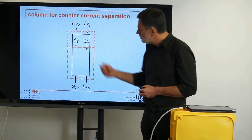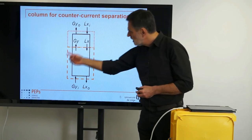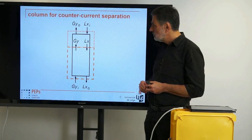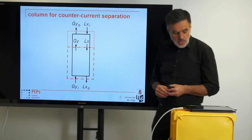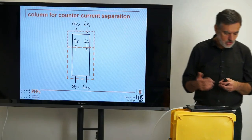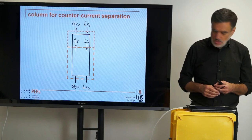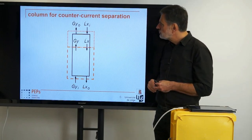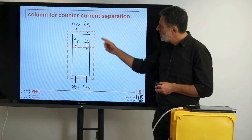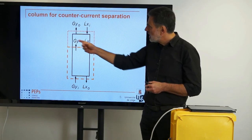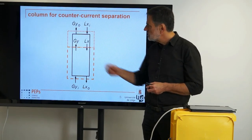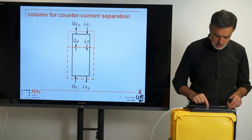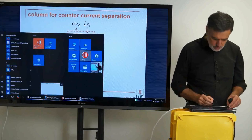We have a top control volume and a bottom control volume that we can regard, and we can set up the balances for these control volumes. Let's first look at the dotted control volume at the top, where we have Xi, YO, and the general X and Y in between. If we set up the balances for that, how does that look?